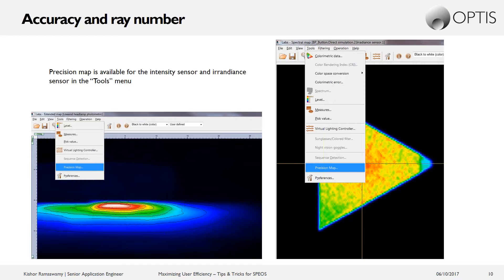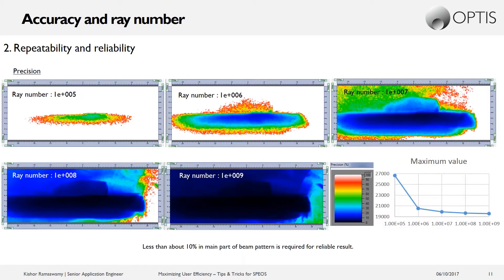So if we look at the precision map for the intensity sensor on the left, when you click on that precision map function, it will open a new window. And this new window gives you a measure from 0 to 100 of how precise the result is. And it's actually an inverse scale, meaning closer to 0 is extremely precise and closer to 100 is essentially not precise whatsoever.